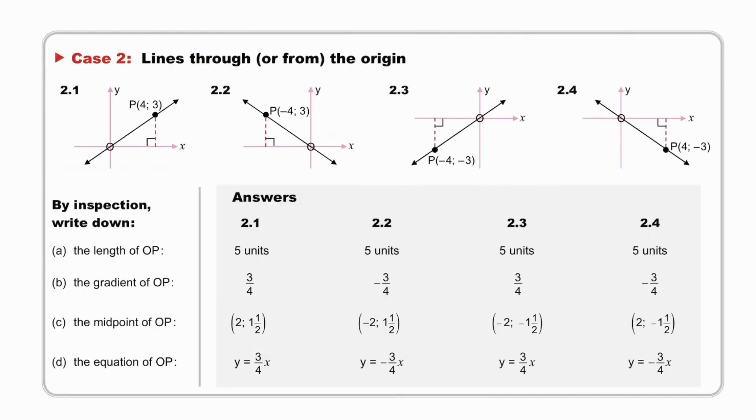Pause to mark your answers. Now pause to study and explain the answers. Once again, did you use or need any formulae? Let's consider the answers. The length of OP was 5 units in all 4 cases. Applying the theorem of Pythagoras, we discovered that we had a 3-4-5 triangle in each case.